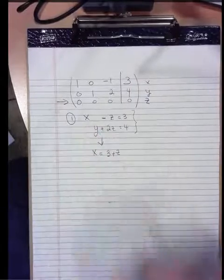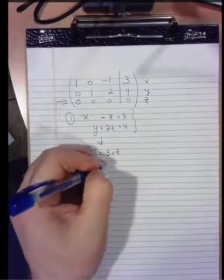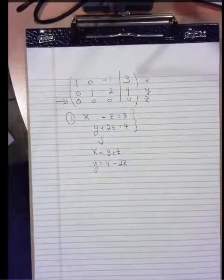the first equation turns into x equals three plus z, and y equals four minus two z.